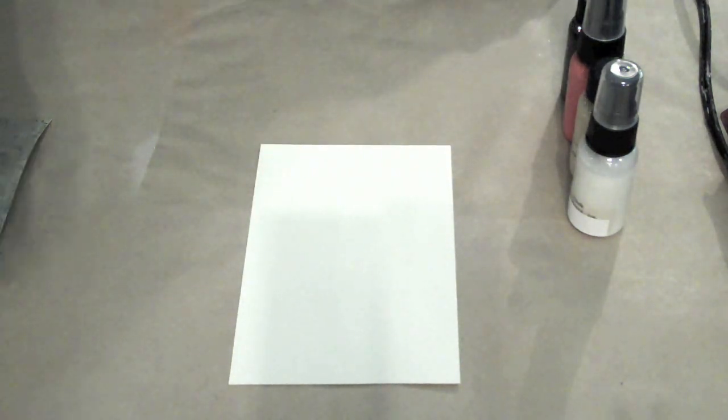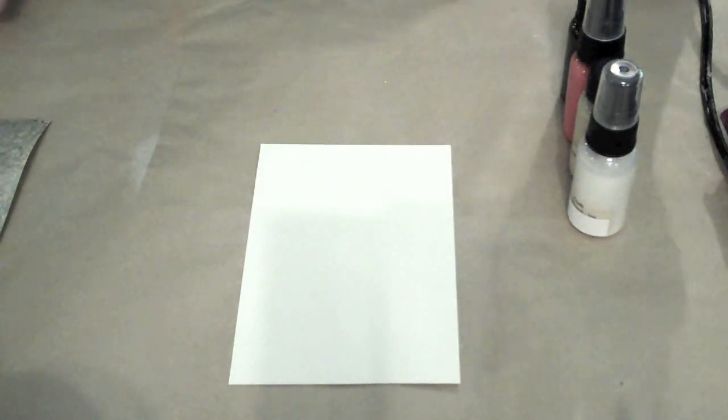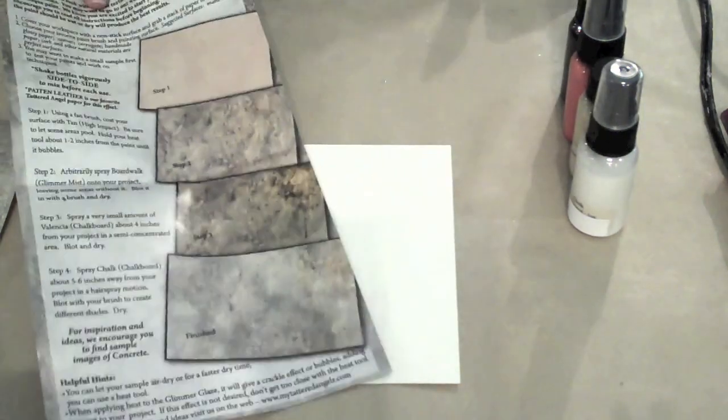You're going to need a fan brush today and a large regular brush or you can just continue to use your fan brush for blotting. We're going to start off with the first step. Like all the Naturally Aged Kits, you have a five step, four to five step process.